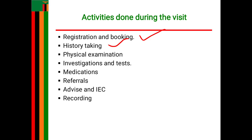Apart from social history, you also find out about family medical history. You want to know any genetic predisposition condition this pregnant woman may be exposed to. Among the conditions you ask about are diabetes — whether anyone in the family is diabetic or the mother herself — and asthma.